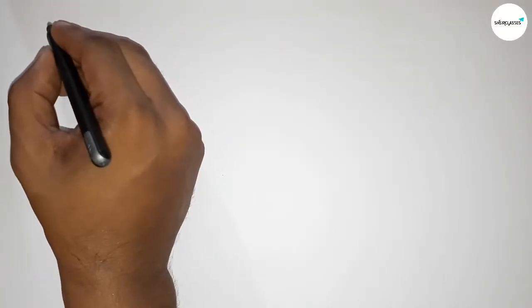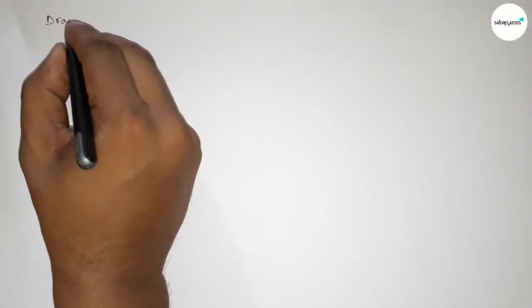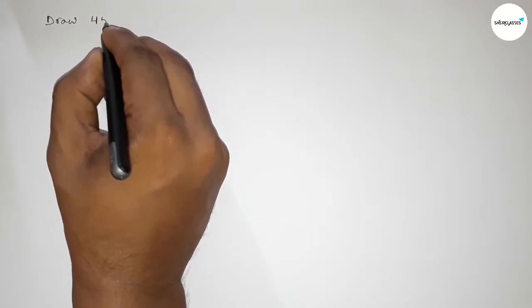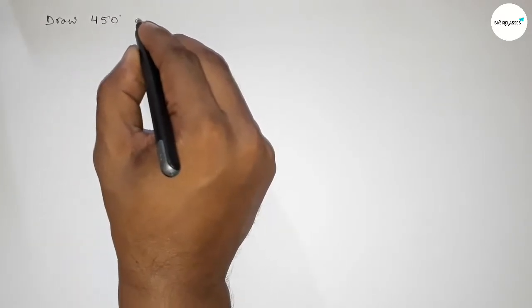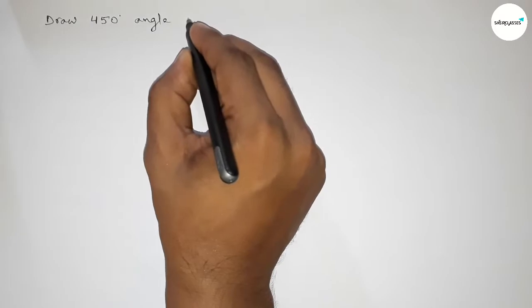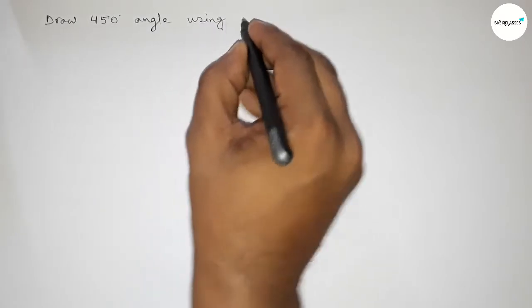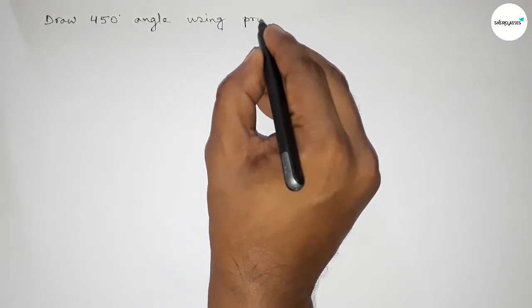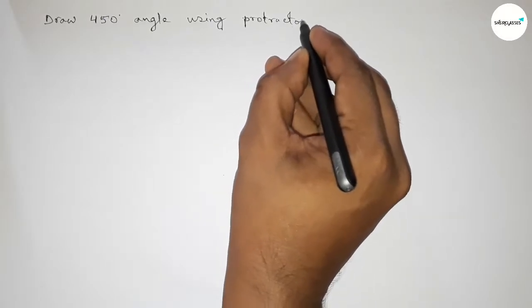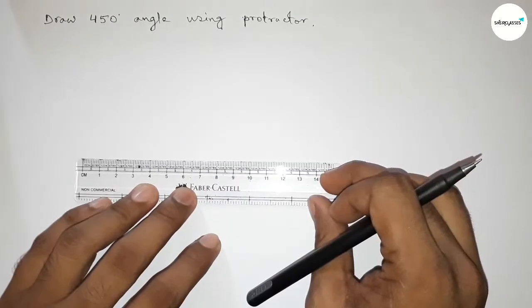Hi everyone, welcome to Essay Share Classes. Today in this video we have to draw a 450 degree angle by using a protractor in an easy way. So let's start the video. First of all, we have to draw here a line of any length.